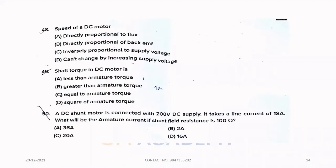Forty-eight. Speed of DC motor. Speed is directly proportional to back EMF. Option B is the correct answer. Forty-nine. Shaft torque in DC motor is. Shaft torque is less than armature torque. Because there are losses.